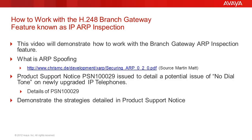When the feature is enabled, the Gateway will not accept an entry into its ARP cache unless it generates an ARP request and receives back a directed ARP reply from the device that owns the IP address.